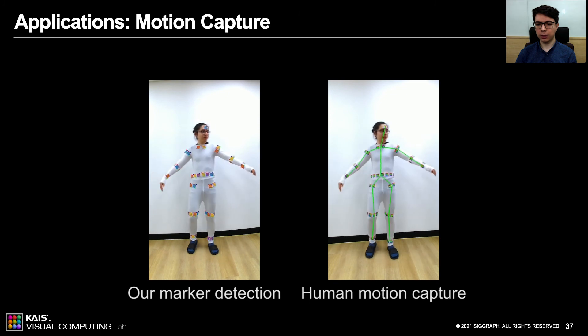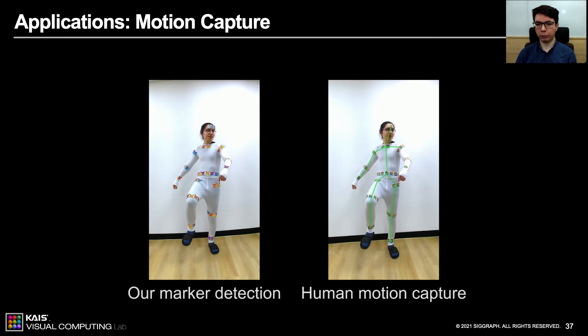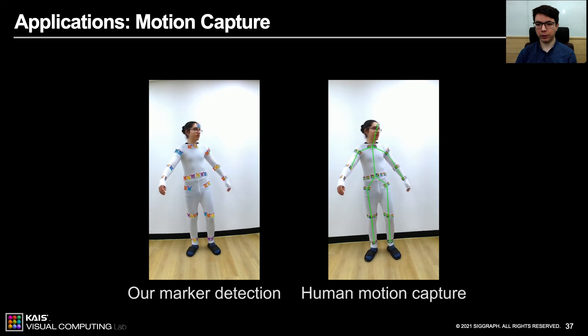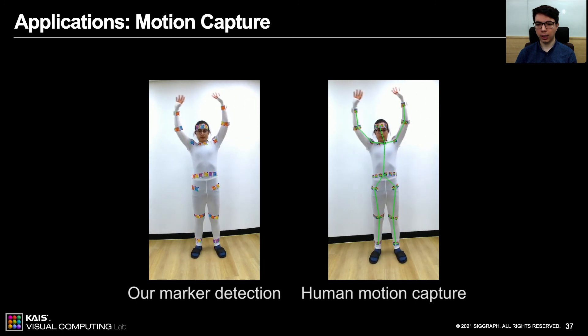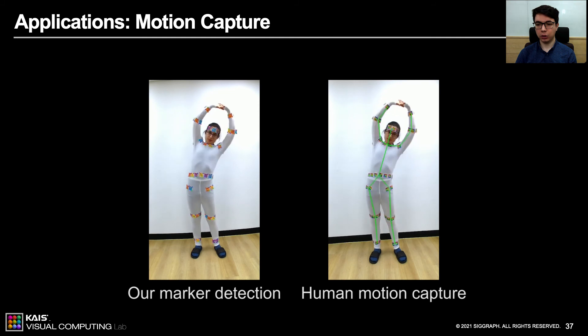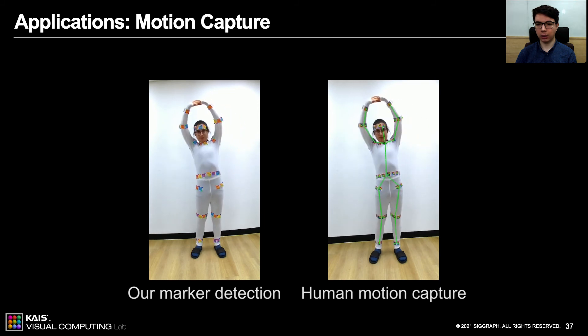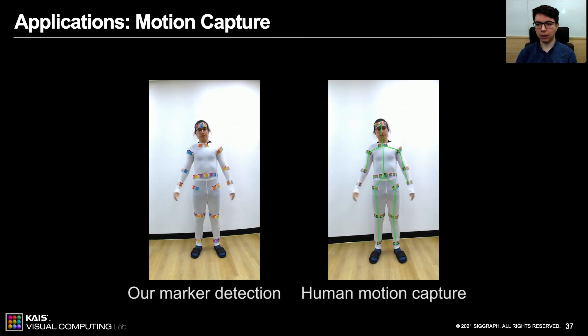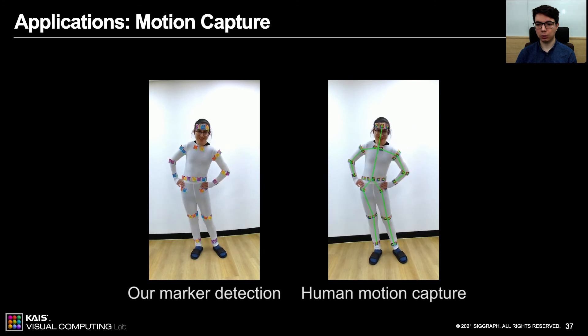We specifically designed our system to enable robust detection of markers on deformable surfaces. In this application, we place our markers on clothes. Then we use our markers like a feature descriptor, which we triangulate through a stereo camera. Using the estimated locations, we estimate the joint points in 3D by averaging the label points in the same joint group.